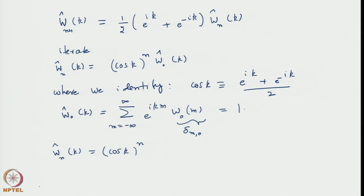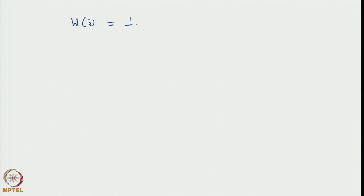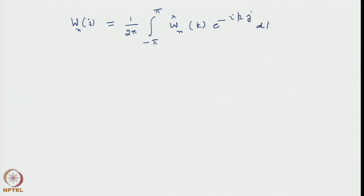Now we have to invert this. For inversion we need the Fourier series inversion formula. In general, any function W at an integer value j is obtained by the Fourier inversion in a finite domain from −π to π of its Fourier series: W_N(j) = (1/2π) ∫_{-π}^{π} W̃_N(k) · e^{-ikj} dk. This is exactly like Fourier inversion, but the domain is −π to π because j values occur on regular integer lattices.